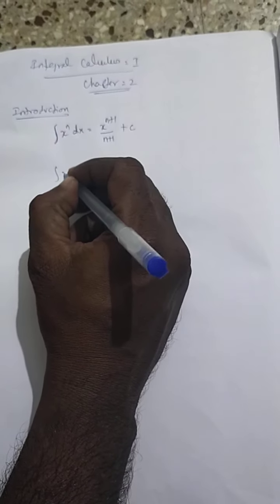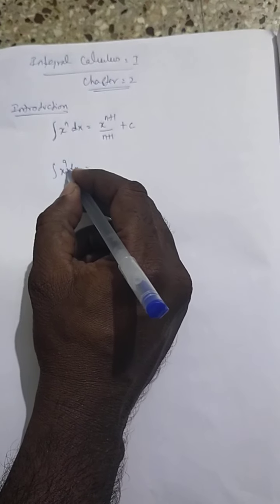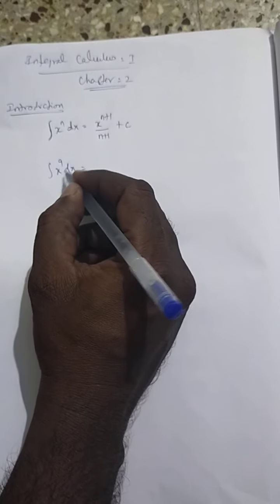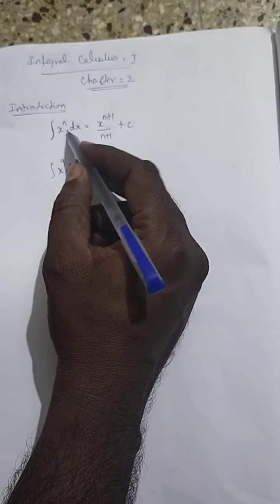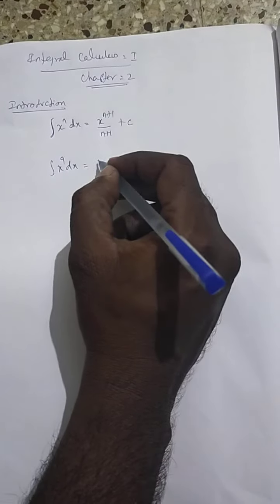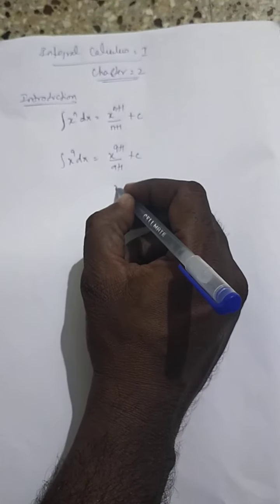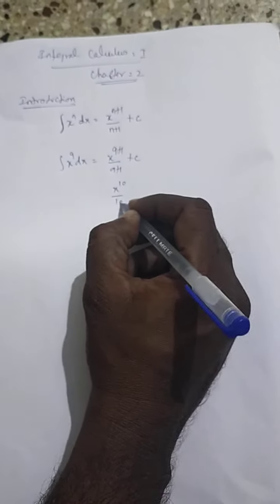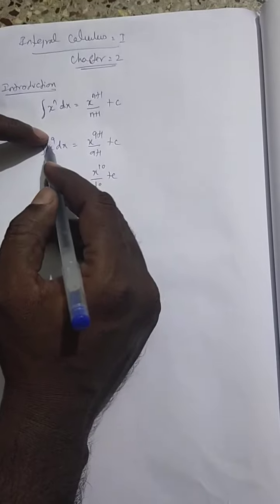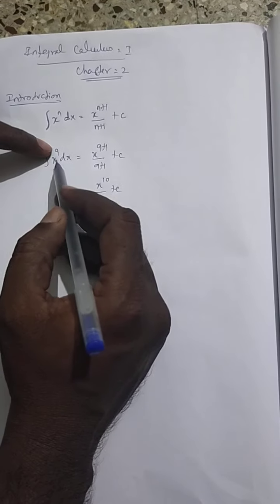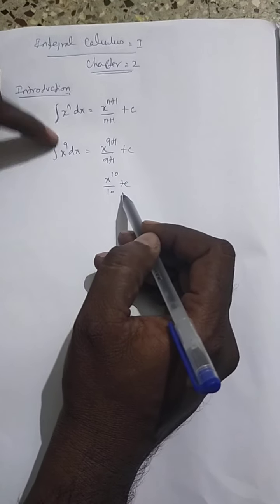So, for example, the integration of x power 9 dx. Here, dx is with respect to x. So, x power n means x power 9, so n is equal to 9. What is the answer? x power 9 plus 1 by 9 plus 1 plus c. So, what is the answer? x power 10 by 10 plus c. This is the basic concept.